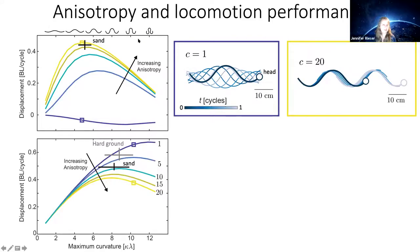I also included the shovelnose snake data point to show it's consistent with the animal data as well. We don't know the exact anisotropy value, but it's pretty consistent and reasonable.